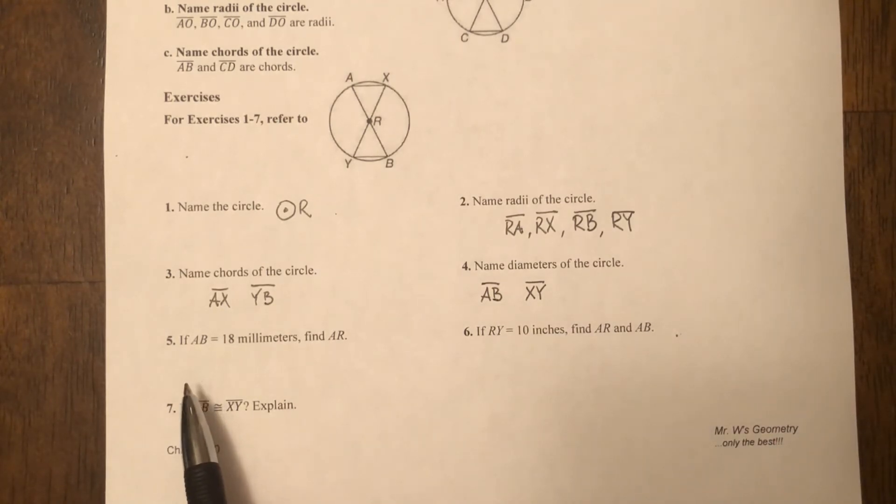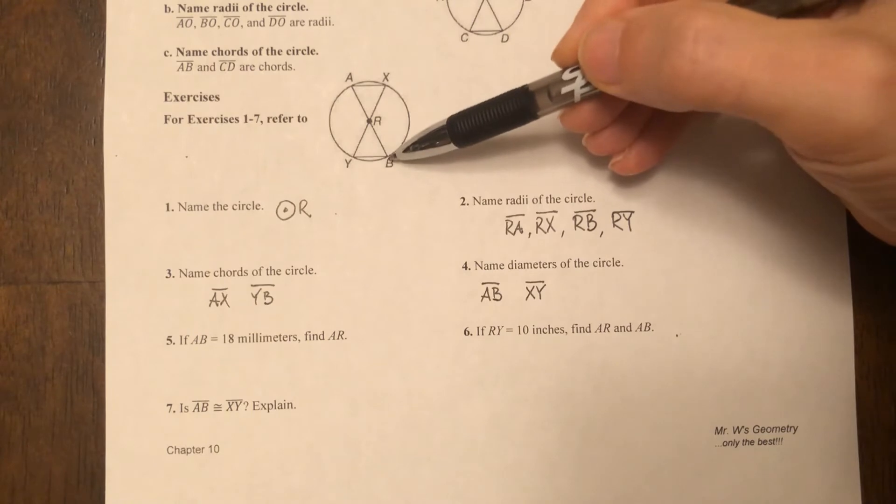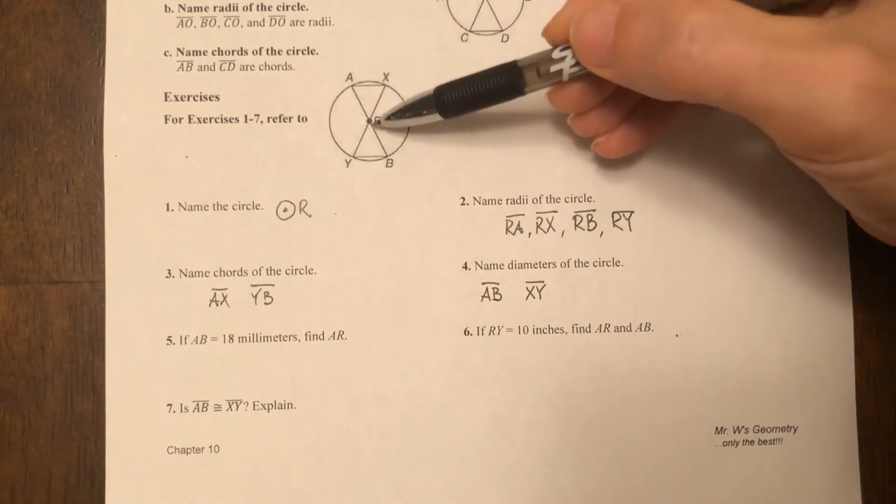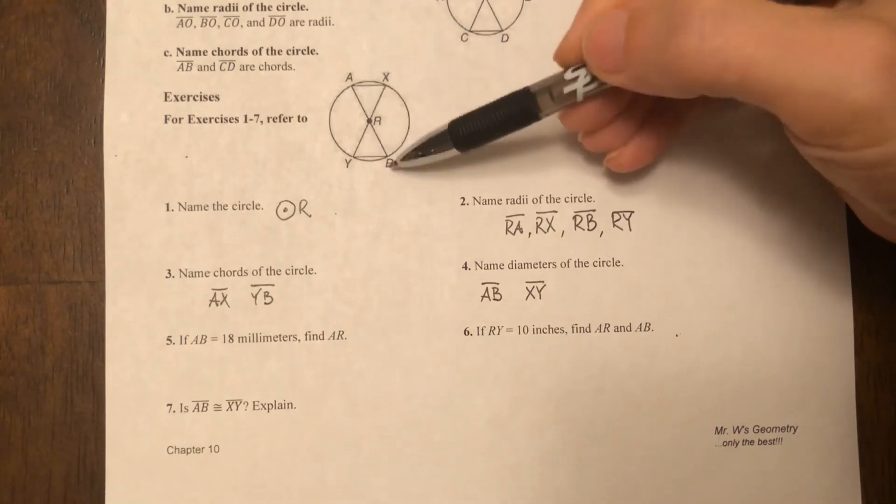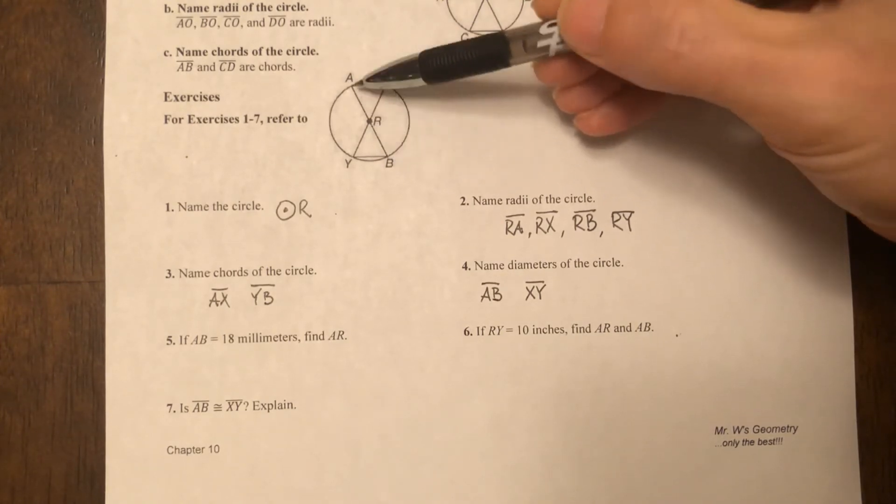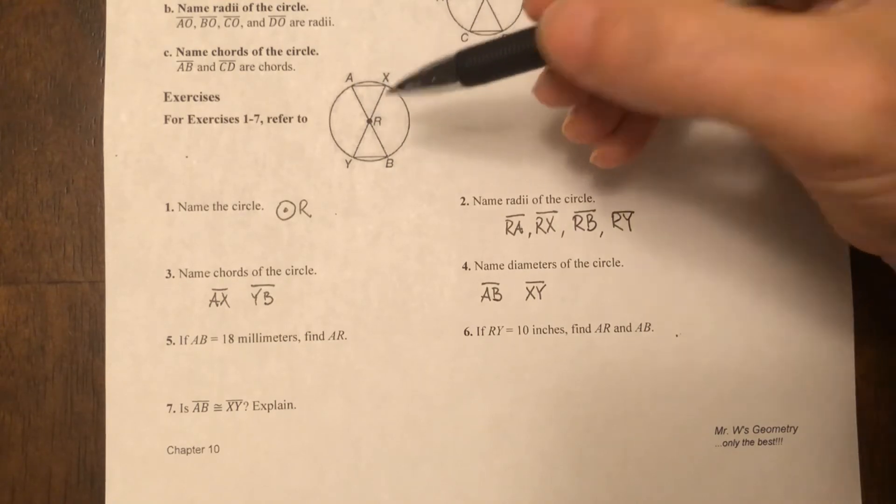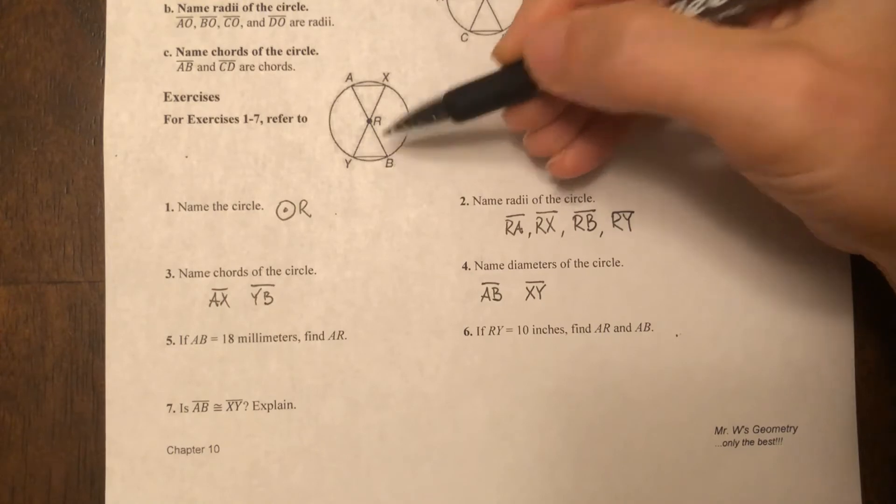Now down here it says if AB is 18 millimeters, find AR. Let's look at AB. AB is a chord because it's going from circle to circle through the center. So AB is 18 millimeters. If this whole entire distance is 18 millimeters, they want to know what AR is.